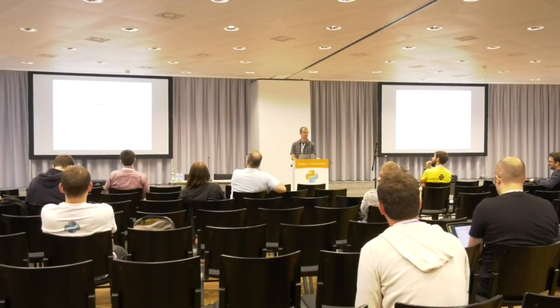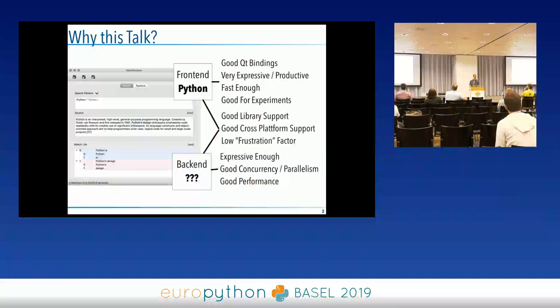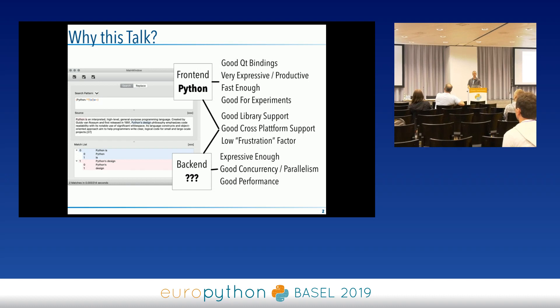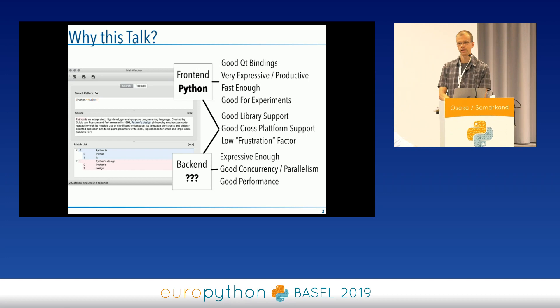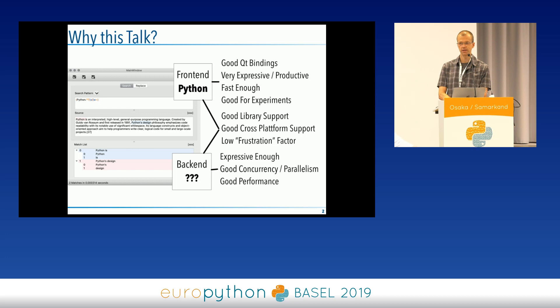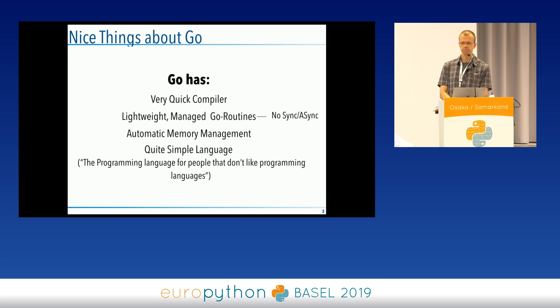First of all, why am I doing this? I have this little hobby project. I want to basically rebuild one of my favorite applications, which is a regular expression tester. I do the user interface with Python — it's pretty nice, it has all the good Qt bindings that I need. But to have more options available for the backend, I'd like to have slightly better performance, better concurrency, parallelism, and support. I wondered which language might I use there, and after some trials looking into C++ first, I ended up with Go.